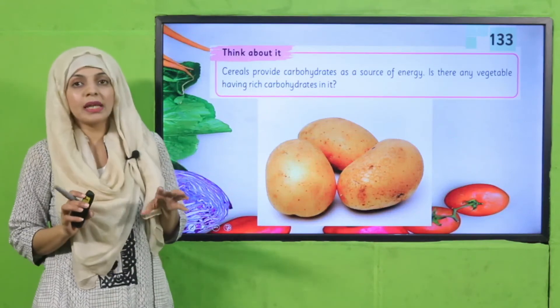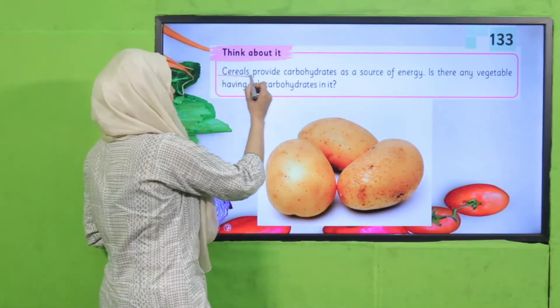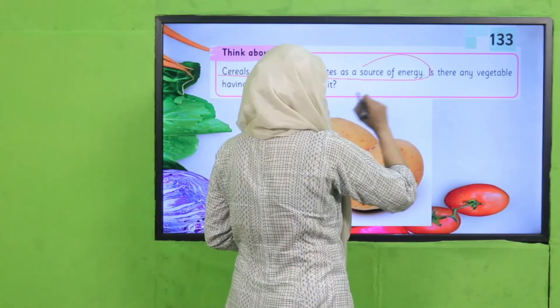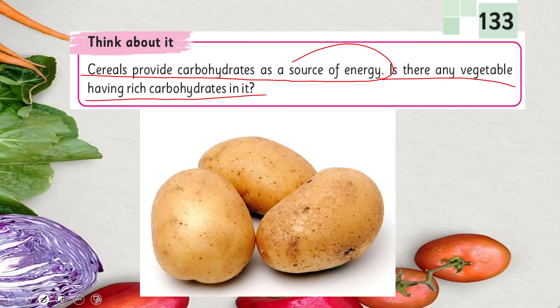Cereals provide carbohydrates as a source of energy. Is there any vegetable rich in carbohydrates? Yes — potato! Alu is very rich in carbohydrates. In addition, sweet potatoes are also very rich in carbohydrates and are a great source of energy.